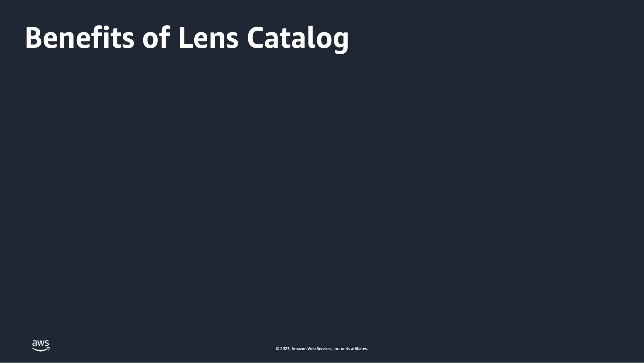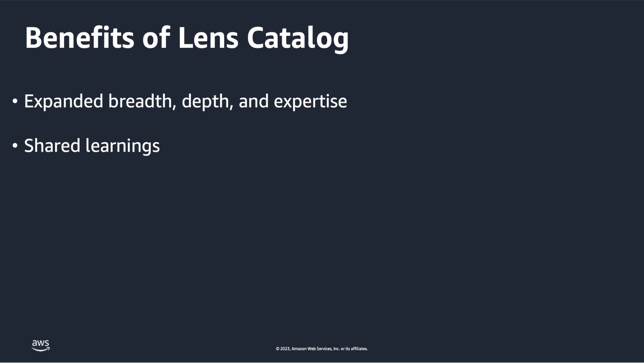The Lens Catalog provides the following benefits — expanded breadth, depth, and expertise. The Lens Catalog provides customers with an essential place to access expert author lenses from AWS, and significantly expands the breadth and depth of industry-specific and technology-focused lenses so customers can better tailor their reviews. Customers can explore the Lens Catalog to learn about industry-specific best practices, helping foster a sense of community and shared learning. AWS will continue to add lenses to the Lens Catalog as new technologies emerge, ensuring customers can always stay up-to-date.